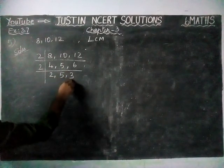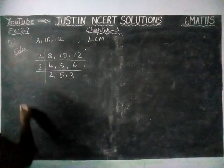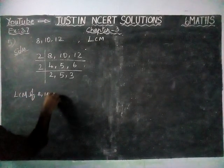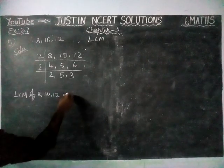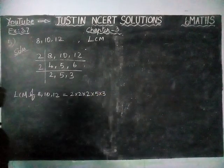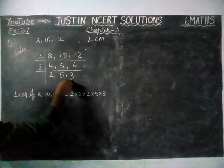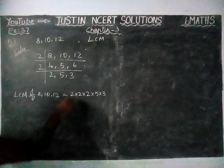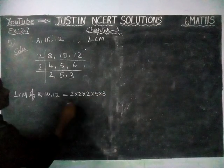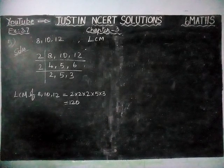Now we have 2, 5, 3. Since 3 and 5 are also prime numbers, we multiply all these numbers. LCM of 8, 10 and 12 is equal to 2 × 2 × 2 × 5 × 3. If there is any common number to divide we divide, but here 3 and 5 are prime numbers, so we multiply as is. 2 twos are 4, 4 twos are 8, 8 fives are 40, 40 threes are 120. So, LCM of 8, 10 and 12 is equal to 120.